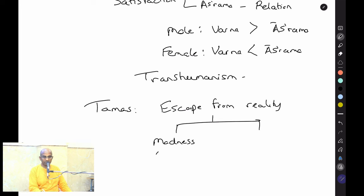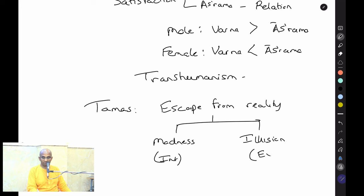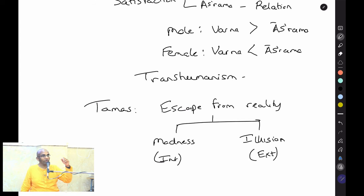Pramada and moha are both forms of escape: pramada is madness, more on the internal/mind level; moha is illusion, more external — like getting lost in a fictional world of movies. Both represent escape from reality. The characteristic of Tamas is escape from reality — either through internal madness or external illusion.